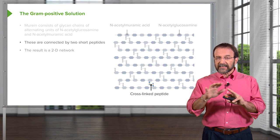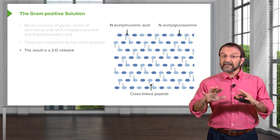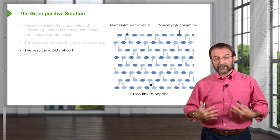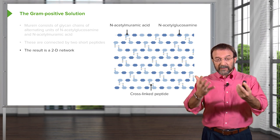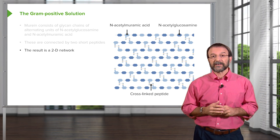So this basically gives us a two-dimensional network, which is sort of like the chain mail that knights used to wear over them that was made of metal to protect them. You can imagine the murine or the peptidoglycan is really something very similar.